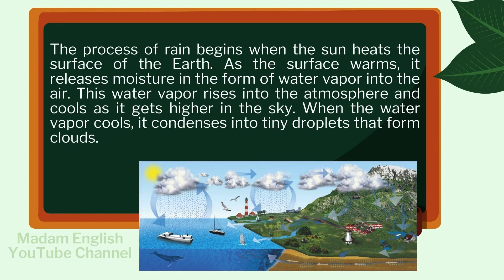The process of rain begins when the sun heats the surface of the earth. As the surface warms, it releases moisture in the form of water vapor into the air. This water vapor rises into the atmosphere and cools as it gets higher in the sky. When the water vapor cools, it condenses into tiny droplets that form clouds.